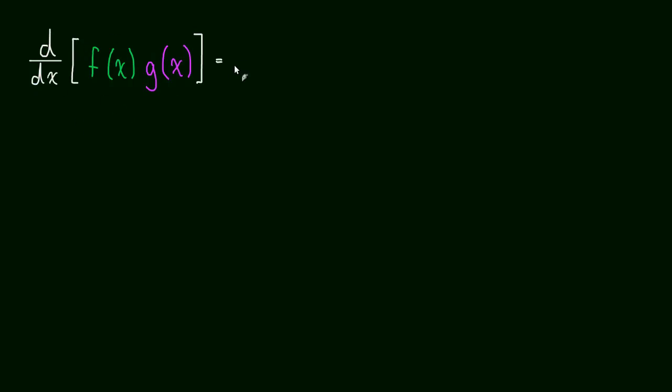The product rule tells us what to do. Take the derivative of the first function, f'(x), then multiply by the second function just as it is. Don't change it at all. Then add to that the first function left alone and multiply by the second function's derivative, g'(x).